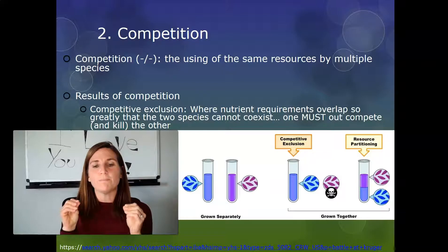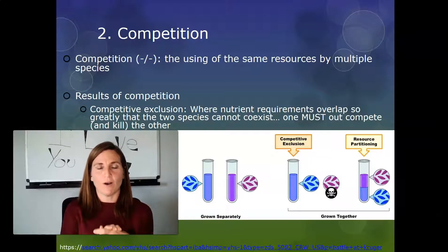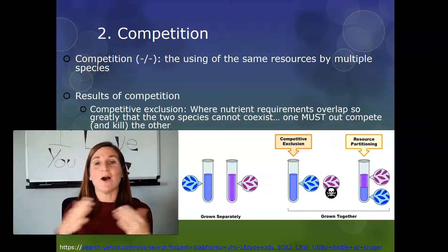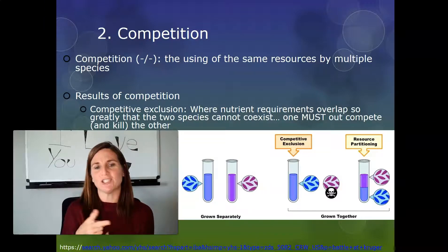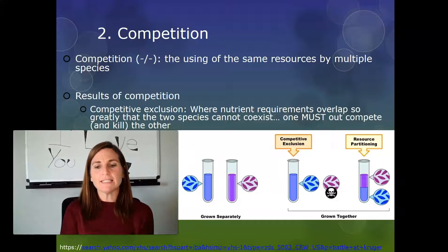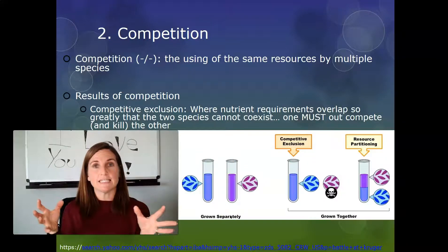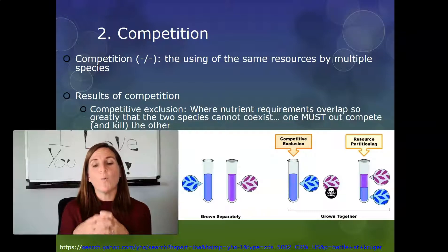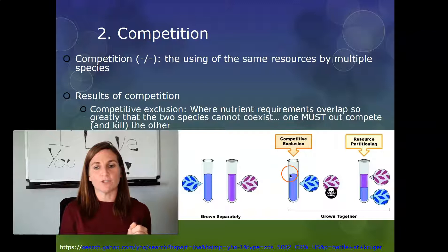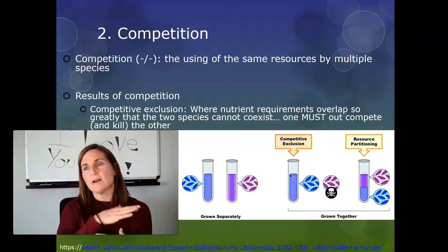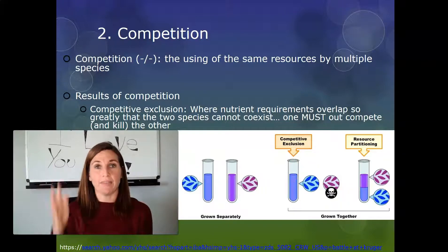What is much better than being in competition is getting out of it. There are two ways to do that. The first is called competitive exclusion. As an example, if we have two different kinds of bacteria — blue and purple — and put them in the same tube, one wins and the other dies. We end up with a tube full of just blue bacteria; they out-compete the purple bacteria and kill them off.